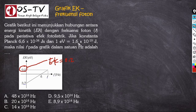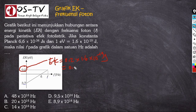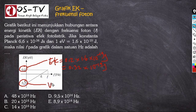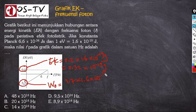Karena 1 eV = 1,6 × 10⁻¹⁹ joule, maka EK = 0,2 × 1,6 × 10⁻¹⁹ = 0,32 × 10⁻¹⁹ joule. Kemudian nilai 3,7 adalah fungsi kerja logam W₀ = 3,7 × 1,6 × 10⁻¹⁹ joule = 5,92 × 10⁻¹⁹ joule.